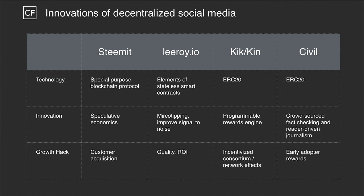Kik and Kin, who will present next, is an extremely compelling project built on a programmable rewards engine that seeks to create massive network effects by allowing people an incentive to join and adopt Kin. That model allows a centralized company to launch a network that will extend far beyond their actual application and create massive network effects. And lastly, we have Civil, a decentralized platform for journalism — they're flipping the model on its head by pre-funding writers who then go out and create content that people would like to read.